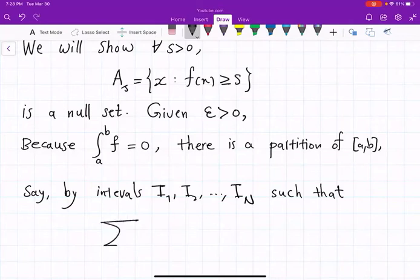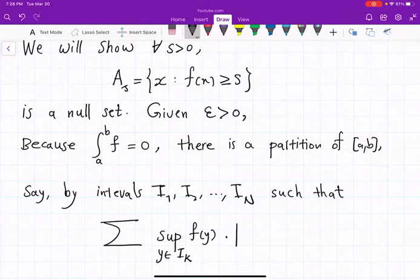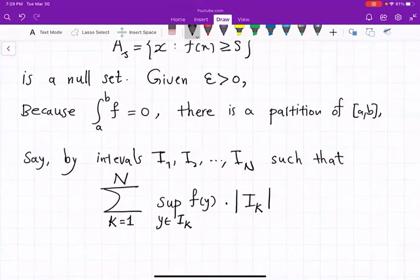So what is the upper Riemann sum? The upper Riemann sum is less than epsilon. So you take the biggest value possible for f in the kth interval, and then you multiply it by the length of the interval k, so I will use the absolute values to denote the length of an interval, summing over k going from one to n. So this is an upper Riemann sum, and we must be able to make it less than epsilon because integral is zero.